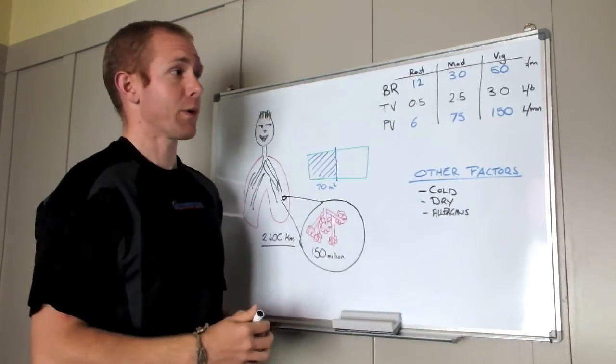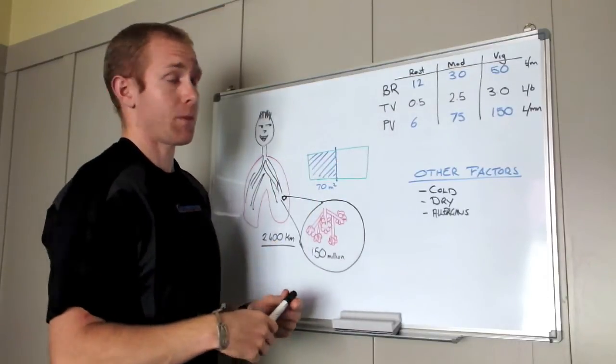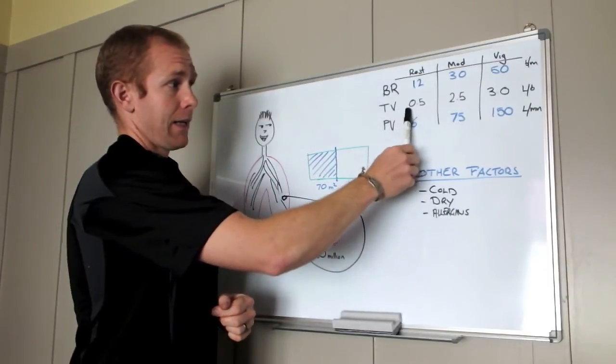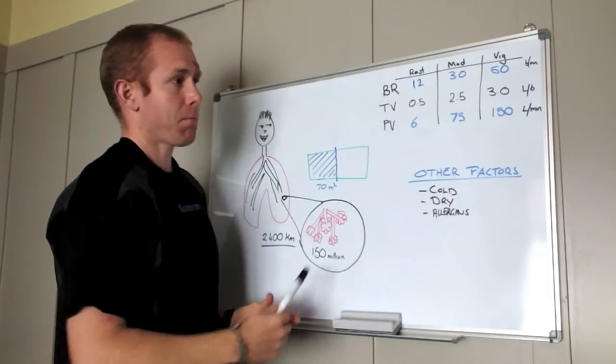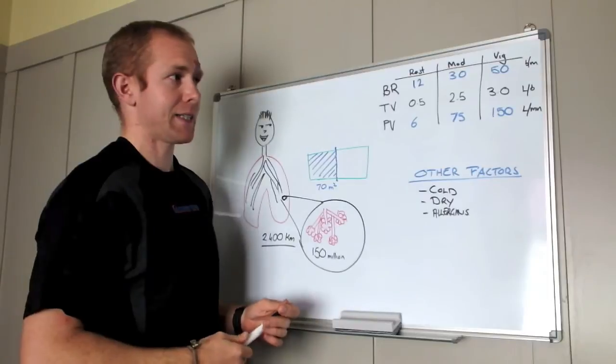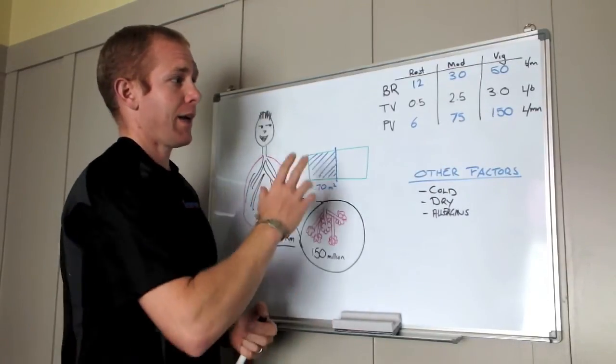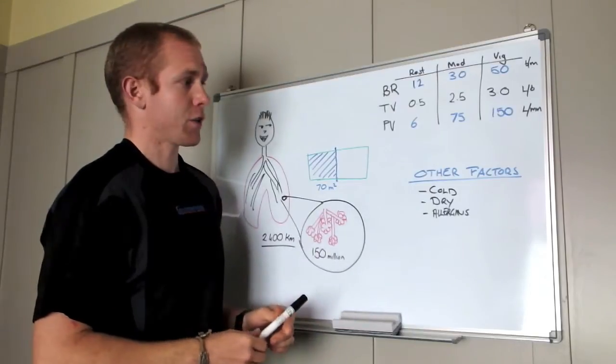Now, tidal volume, how deep we're breathing, how many liters we're consuming per breath. At rest, it's about half a liter, and this quickly increases. Moderate exercise, about two and a half liters per breath. And vigorous exercise, about three liters per breath.